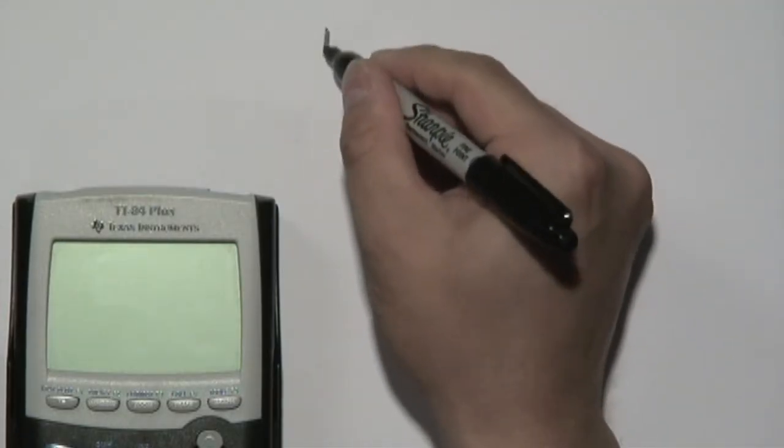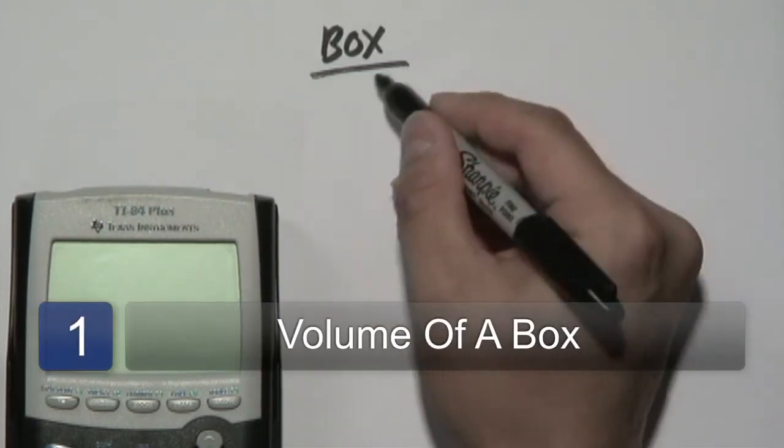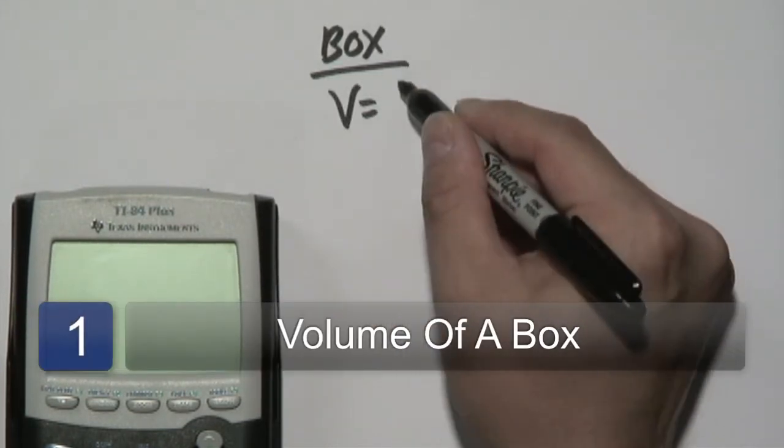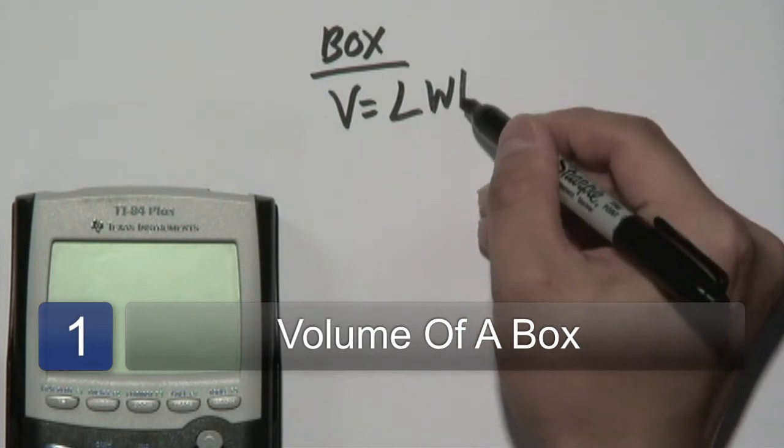We're going to first talk about a very common shape known as the box. The volume of a box is length times width times height.